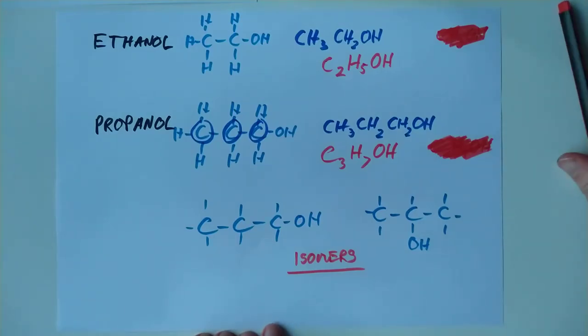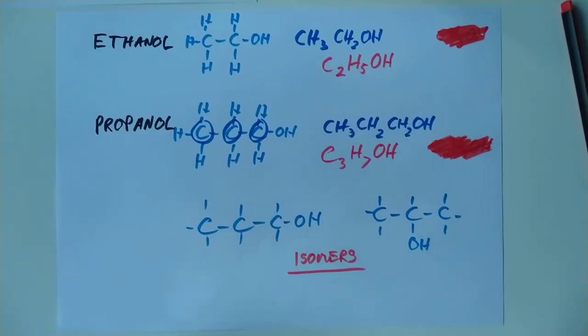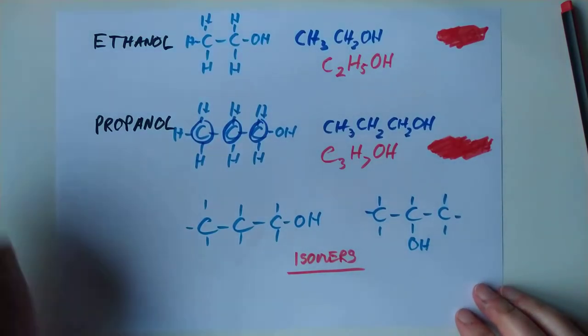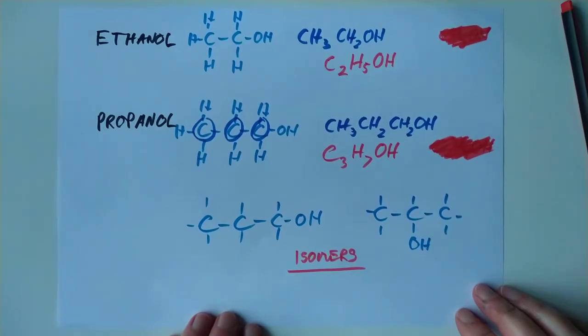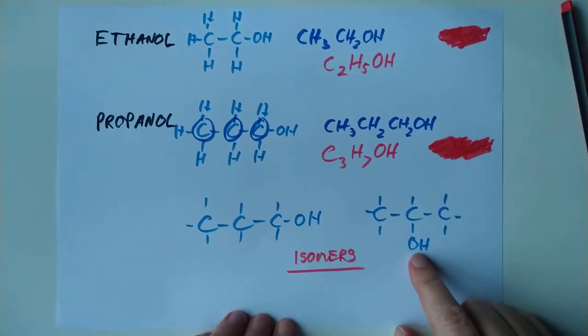Now it's definitely not enough to call them both propanol. So how do we name them? The good news is we use a set of rules very similar to that of the alkenes. The first rule was find the longest straight chain of carbons that contains your functional group. That's your basic skeleton. Number from the end nearest the functional group. And this is the OH, the hydroxyl.